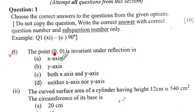Our question 1 will be: the point (0,0) is invariant under reflection in. Now, (0,0) is the origin. So if you reflect it in x-axis and y-axis, it will still remain (0,0). And so the correct option is C, both x-axis and y-axis.